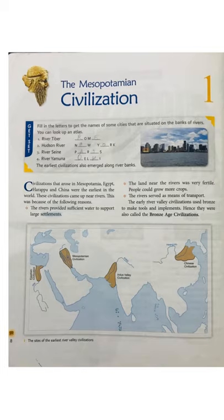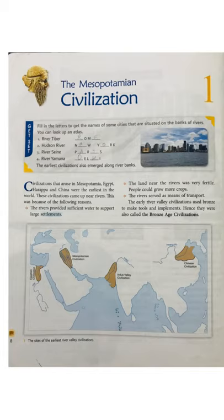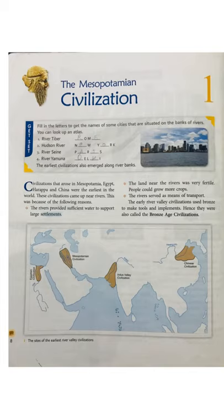Before we start the chapter, you should know what is Civilization. The meaning of Civilization is a society which has its own highly developed culture and way of life. Any society that has got its own way of life and a developed culture is known as Civilization. If you see page number 9, this word Civilization comes from the Latin word Civitas, which means city.